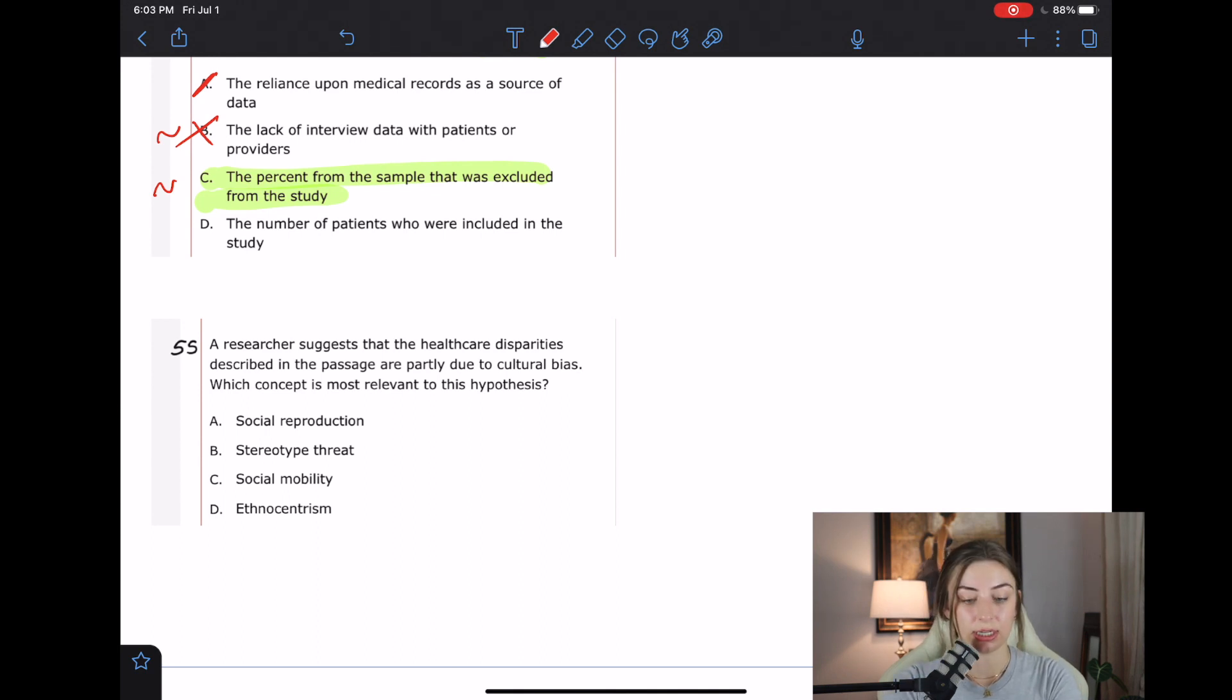C says social mobility. So that's like moving between classes. I don't see that in the passage either. So far, social reproduction is actually the best one.